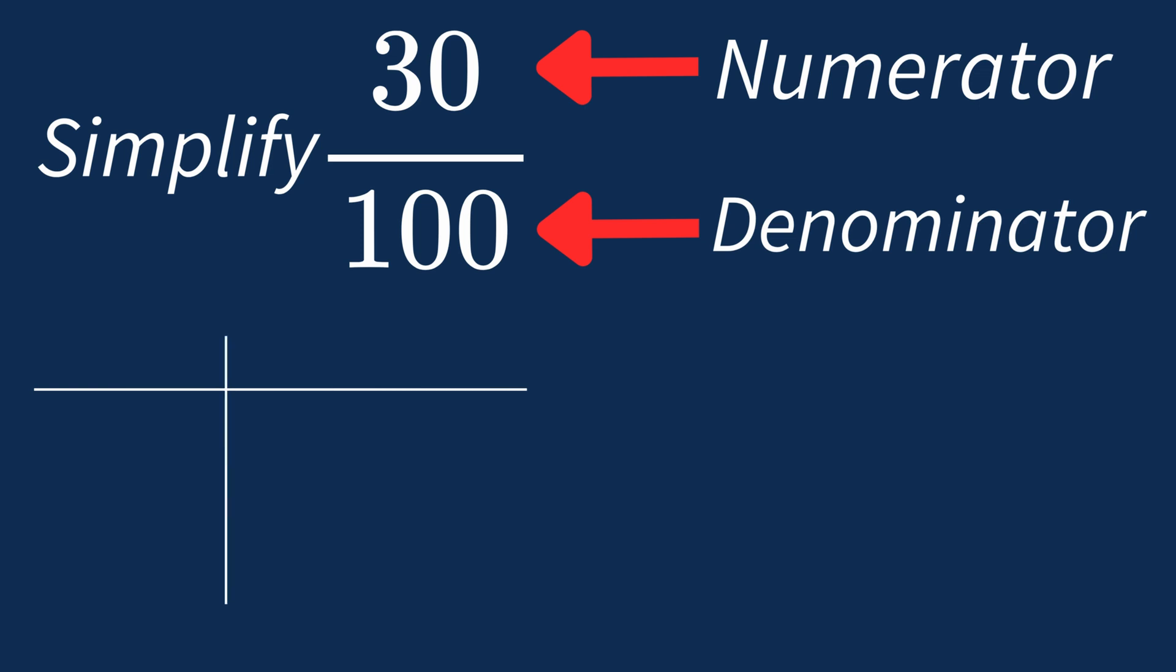First, let's list out the factors for each. For 30, the factors are 1, 2, 3, 5, 6, 10, 15, and 30.